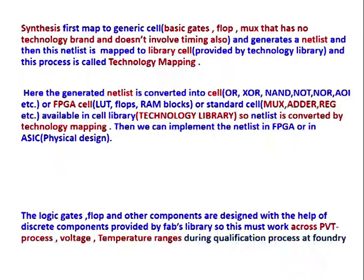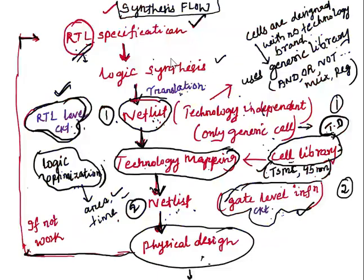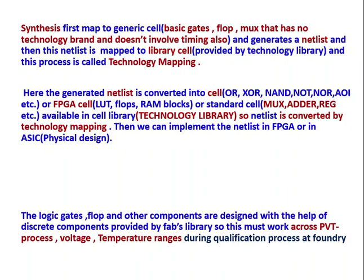To summarize: synthesis first maps to generic cells — basic gates, flops, mux — using the generic or technology-independent library which has no technology brand and no timing. It generates a first netlist. Then this netlist is mapped to library cells using the technology-dependent library provided by the foundry. This process is called technology mapping.